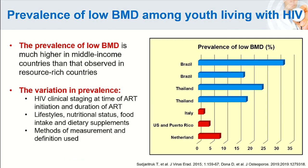This slide shows the prevalence of low bone mineral density among youth living with HIV. The prevalence in resource-rich countries such as Italy, the U.S., and Netherlands seems lower compared to resource-limited settings like Thailand and Brazil. The variation in prevalence may be due to differences in HIV clinical staging at ART initiation, duration of ART, as well as differences in lifestyle, nutritional status, food intake, dietary supplementation, and the method of assessment and definition of low bone mineral density used in each study.